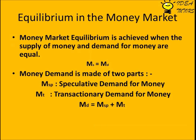Equilibrium in the money market is achieved when the supply of money and demand for money are equal. Money demand is made of two parts: MSP, the speculative demand for money, and MT, the transactionary demand for money. Therefore, MD equals MSP plus MT.